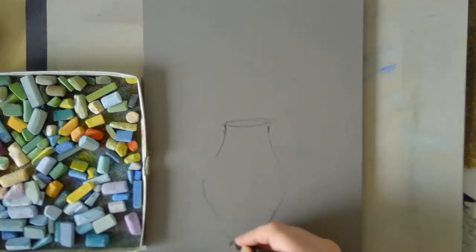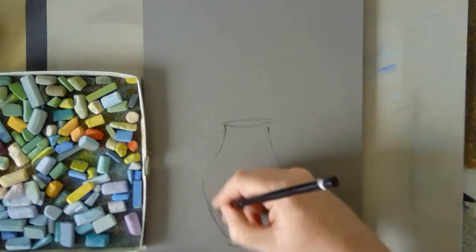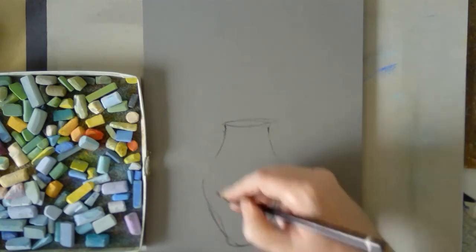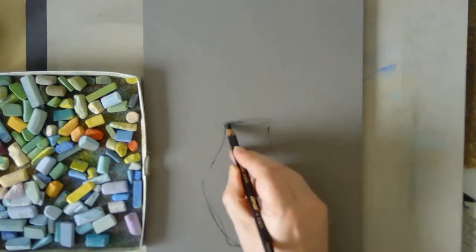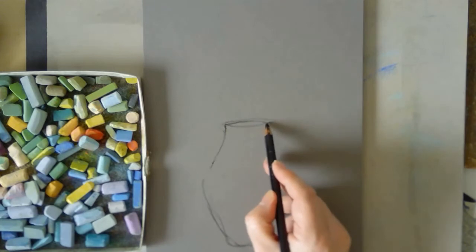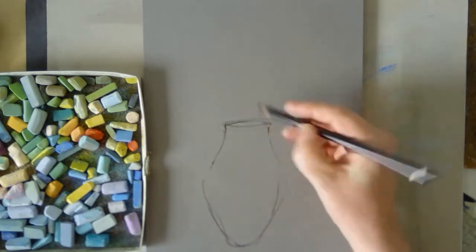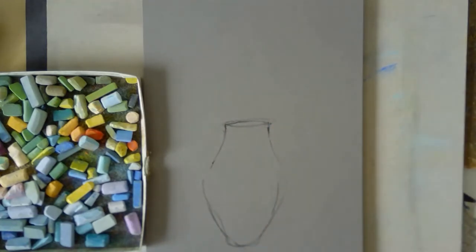I don't actually have any pastel paper. The paper I'm using is just a sketchbook, and you can see it has a gray-toned surface. It's a gray-toned sketchbook. I can't remember the exact brand, but there's lots of different brands out there that produce these toned sketchbooks.